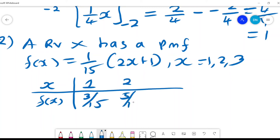And when X is 3, it will be 7 over 15. One thing you'll note is that 3 plus 5 plus 7 over 15 will give you 1, and that proves to us that f(X) is a probability mass function.